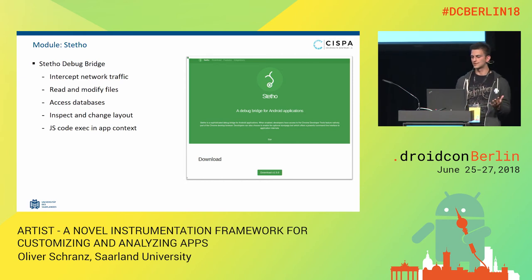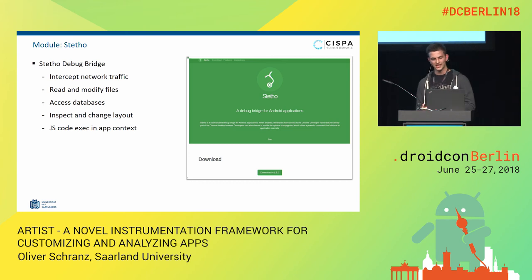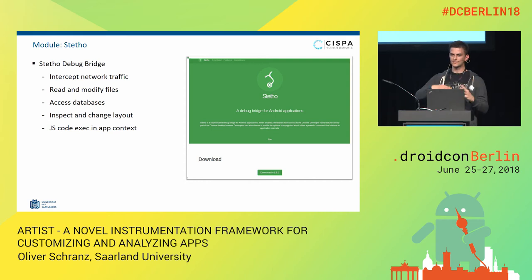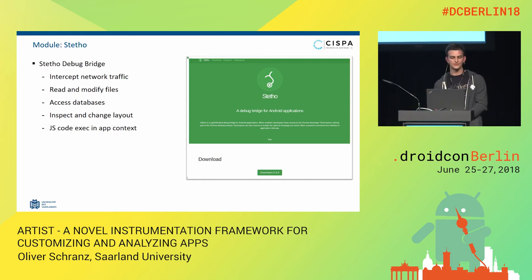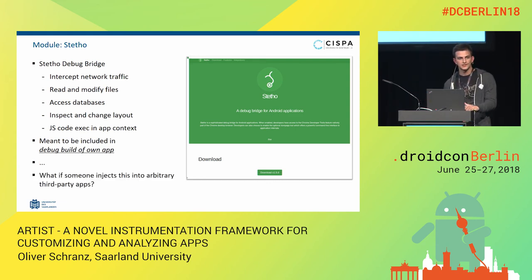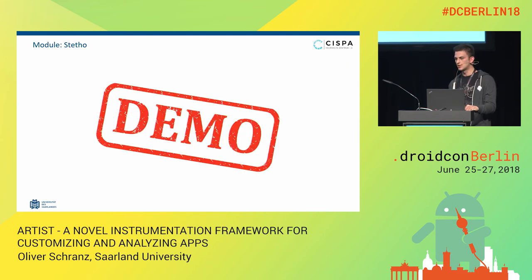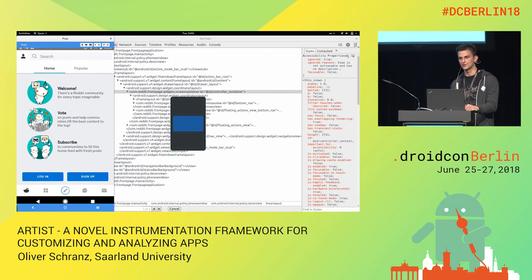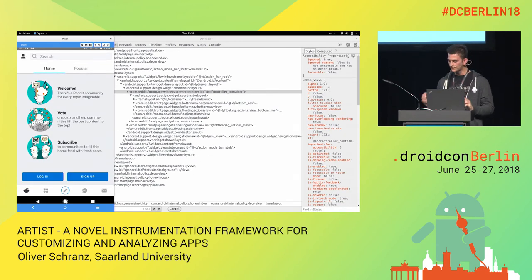Let me give an example. Whoever heard of the Stetho library? If you have this in your debug version of an app, it connects your app to the Chrome developer tools and you can do a lot — intercepting network traffic, reading all the files, accessing the database. There's a lot you can do. You can even execute JavaScript in the context of an app. I said this is meant to be included in the debug version of your app, but what if some researchers tried to inject this into arbitrary applications? That's exactly what we did.